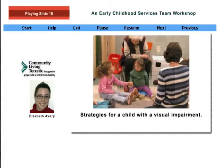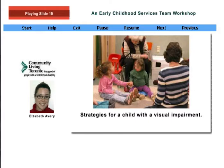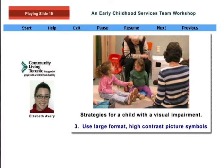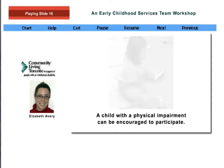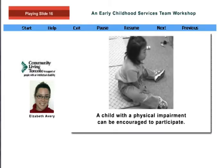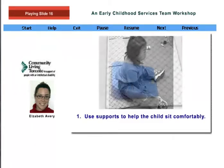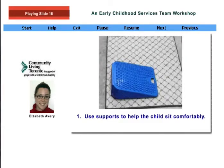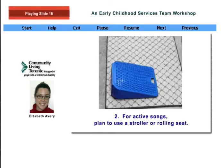For a child with a visual impairment, use physical prompts until verbal prompts can be followed. Holding hands with a child partner may be helpful. Use large format, high contrast picture symbols. A child with a physical impairment can be encouraged to participate as much as possible — use supports such as adaptive seating or seating props to help the child sit comfortably. For active songs, plan to use a stroller or rolling chair to support the child's participation.